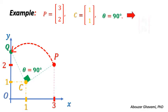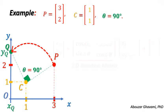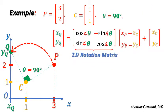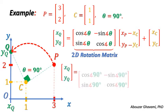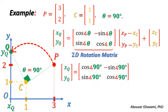We find the coordinates of rotated point Q, that is the 90 degrees counterclockwise rotation of point P around center point C. Using the equation for rotating a point counterclockwise with angle theta, we have XQ and YQ equal to the 2D rotation matrix with elements cosine of 90 degrees, minus sine of 90 degrees, sine of 90 degrees, and cosine of 90 degrees, times the difference vector with elements 3 minus 1 and 2 minus 1, plus the coordinates of center point C with elements 1 and 1.